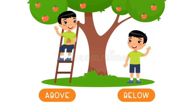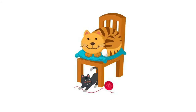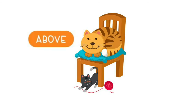Children, look at this picture. The boy on the left side is above the tree and the boy on the right side is standing below the tree. Now look at this picture and tell me who is above the chair. Very good — the yellow cat is above the chair, and the wool and the black cat are below the chair.